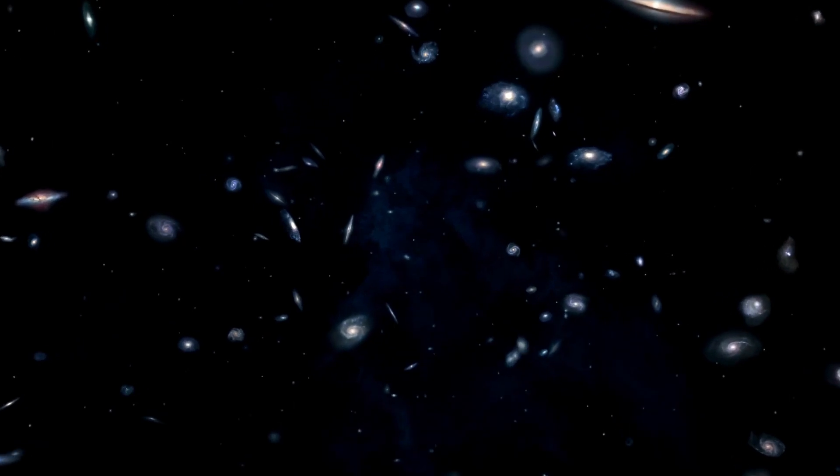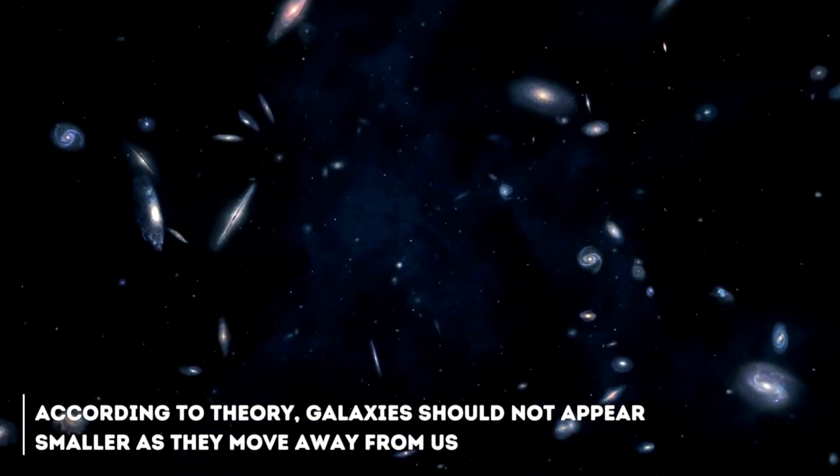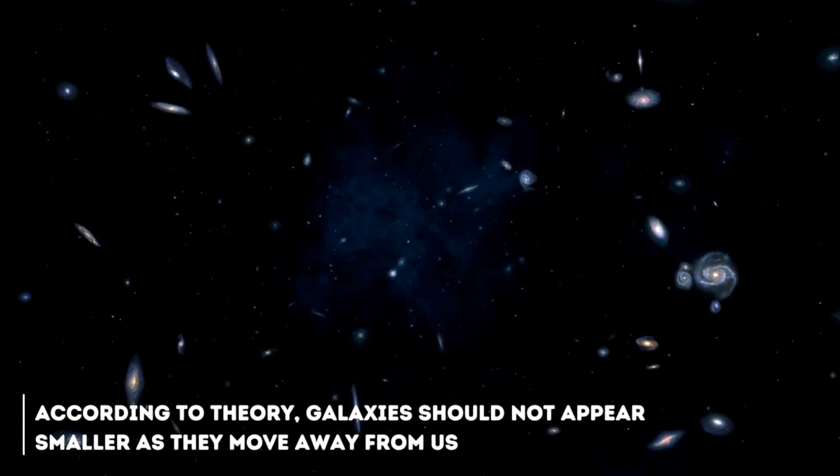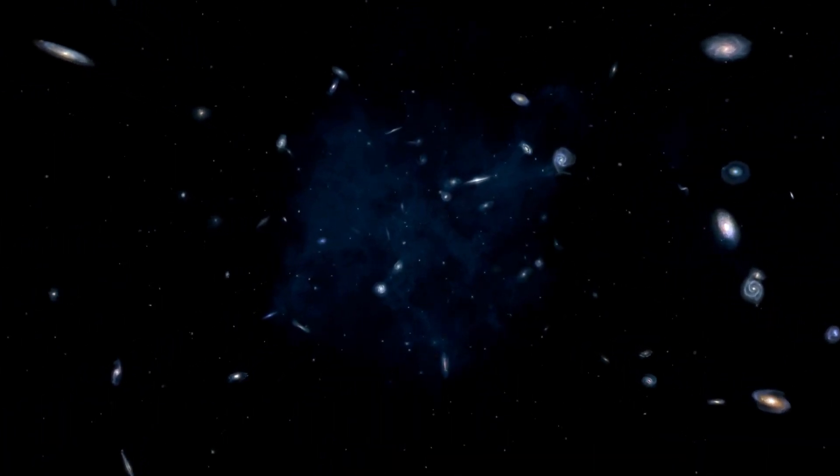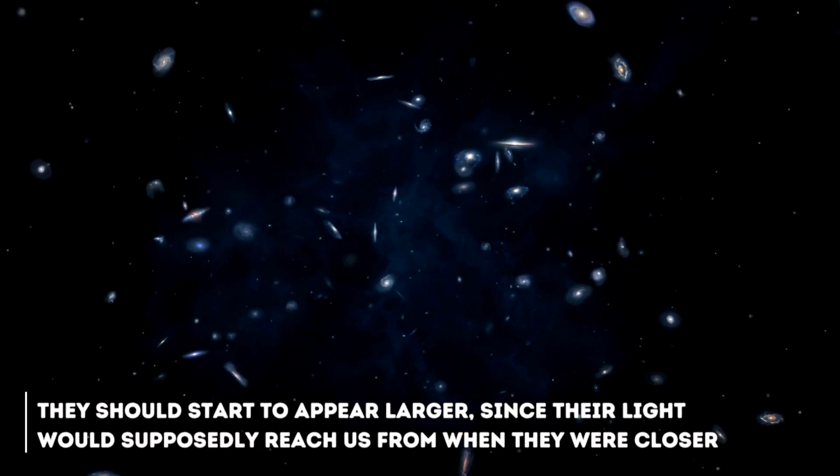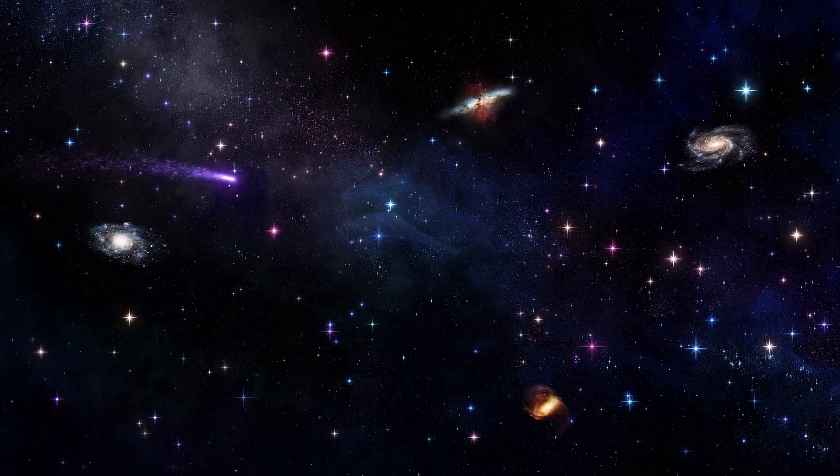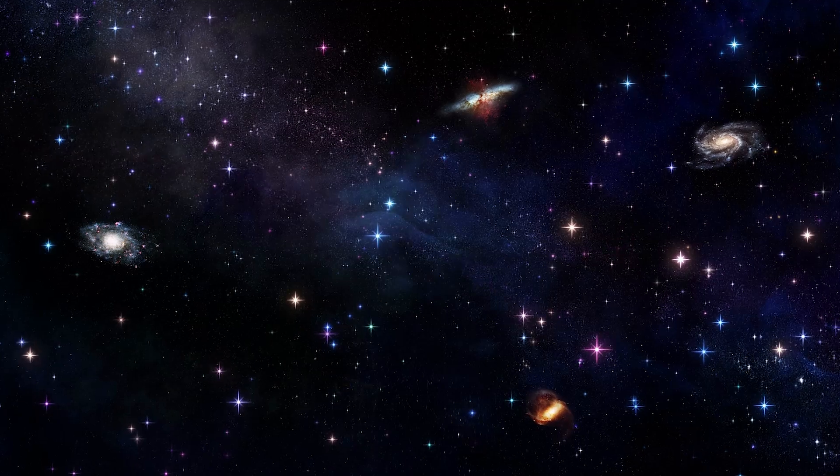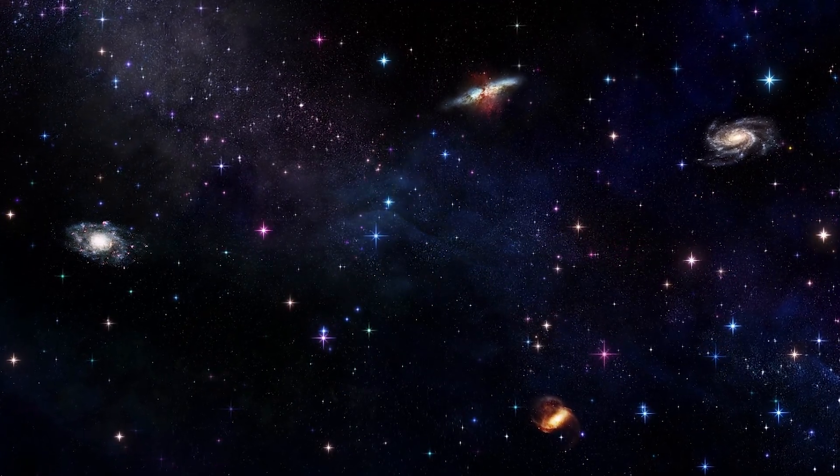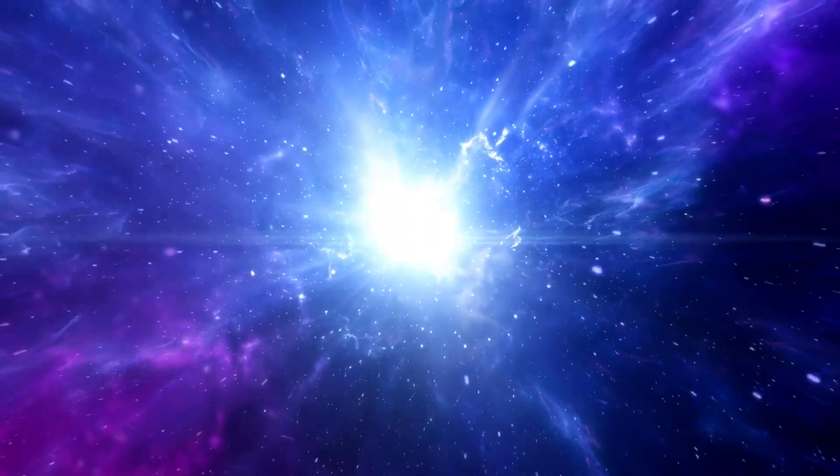Let's try to simplify the puzzle of these discrepancies. Let us imagine that the universe is an expanding balloon. According to the theory, galaxies should not appear smaller as they move away from us. At a certain point, they should start to appear larger, since their light would supposedly reach us from when they were closer. This strange but essential twist on the concept of an expanding universe is seen in the James Webb's images, where galaxies appear to be the same size as those close to us. The theory may be actually quite wrong about several things, surprisingly enough.